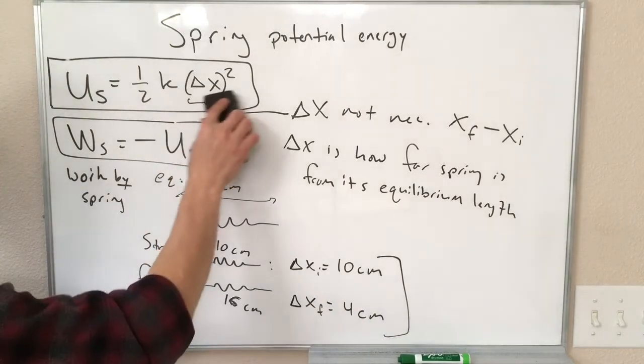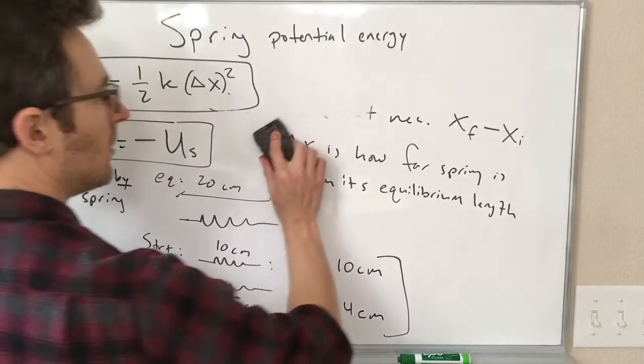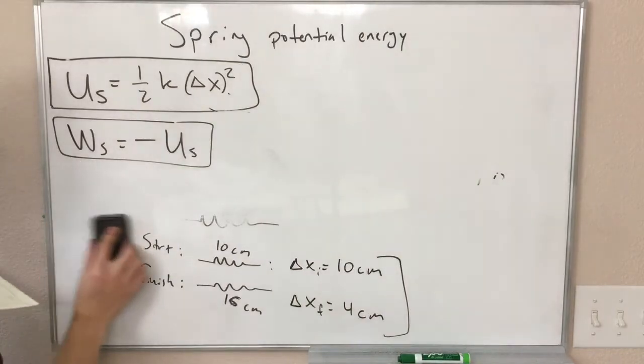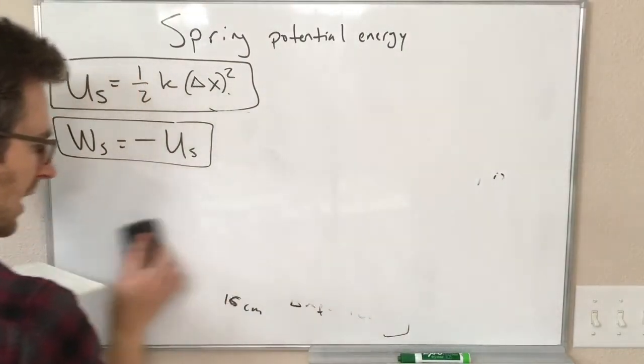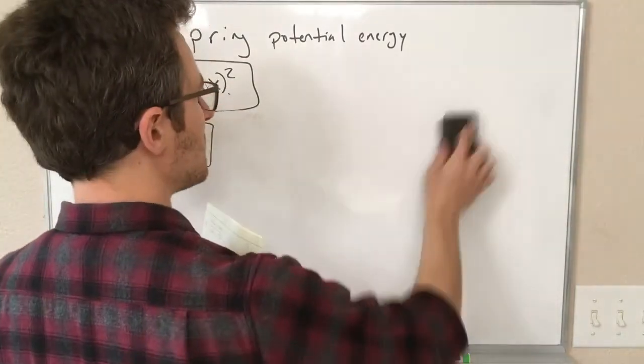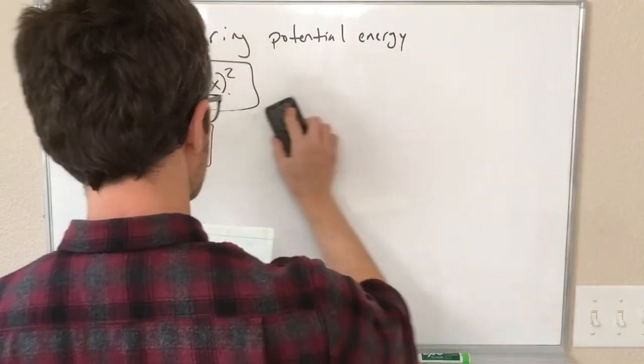Let's erase some of this. So we have the potential energy stored in a spring, we have the work done by the spring. Why is this useful?